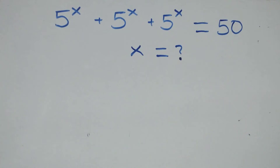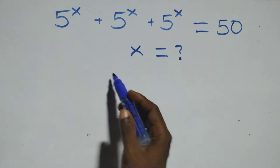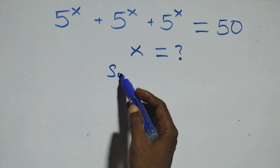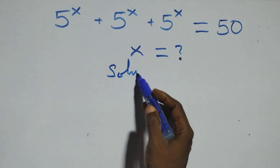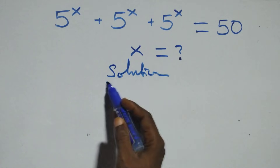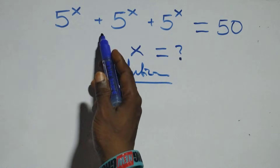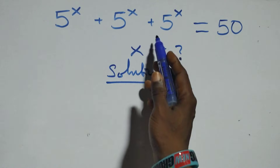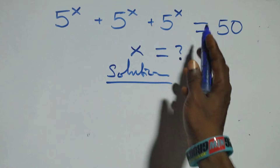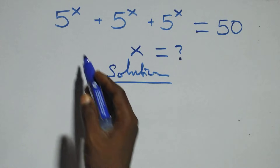Hello, you're welcome. How to solve this nice exponential equation. What we have here is 5 raised to power x, plus 5 raised to power x, plus 5 raised to power x, equals 50.